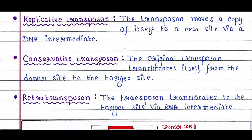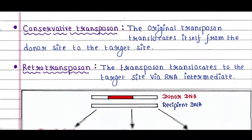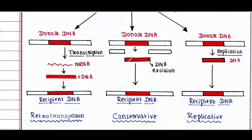Next is conservative transposition. The original transposon translocates itself from the donor site to the target site. Here, the donor DNA gets excised and inserted into the recipient DNA — this is called conservative transposition.